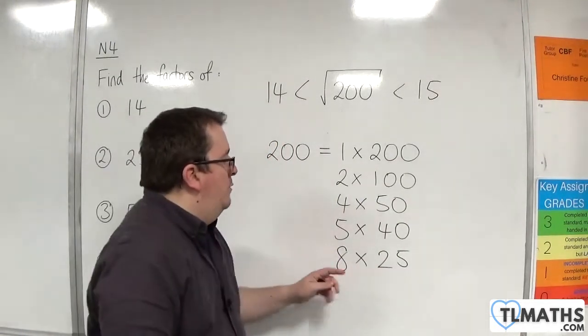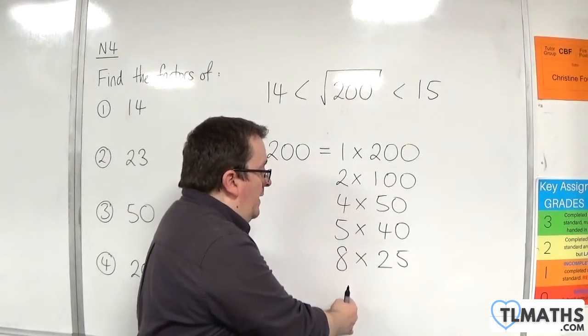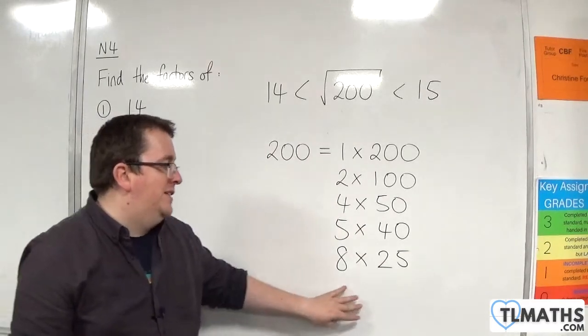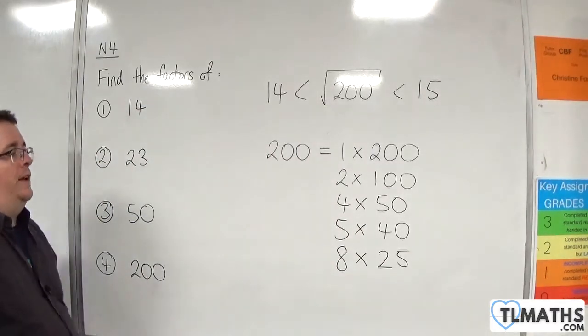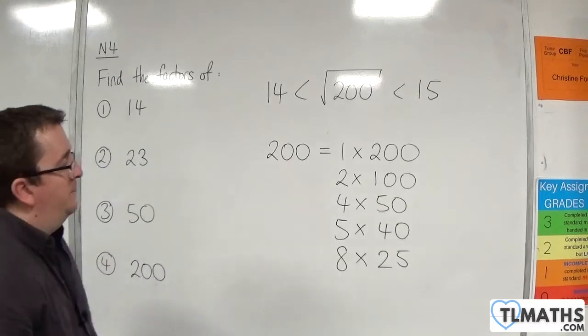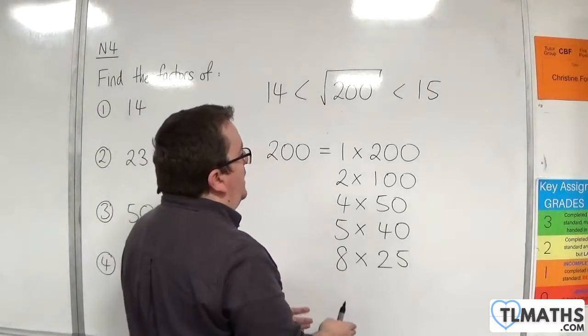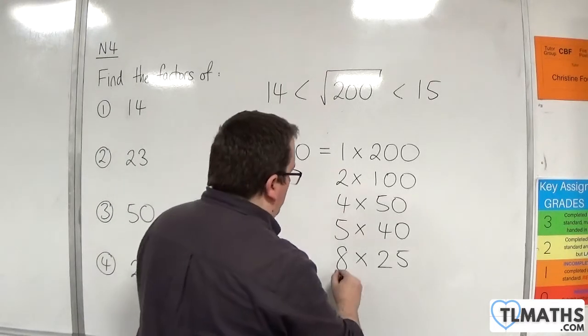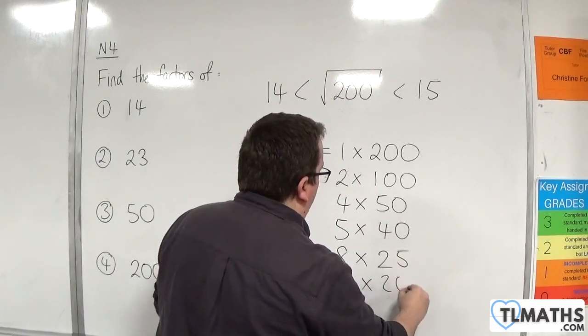So, I know that if I do double the one on the left, halve the one on the right, it's not going to work next time. Because, 16 times 12.5. So, that's going to be out. Now, 9's not going to go in because 3 didn't go in.